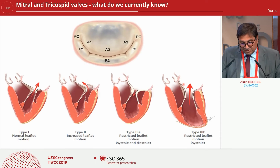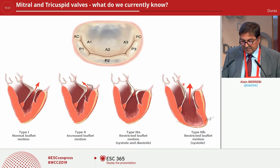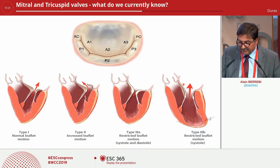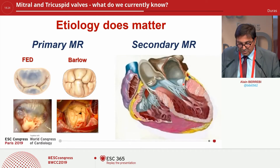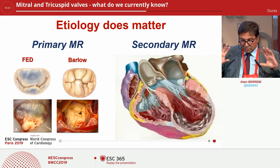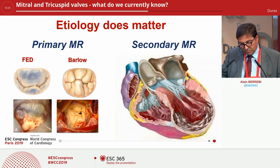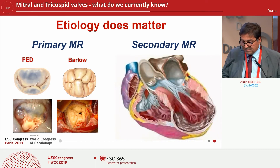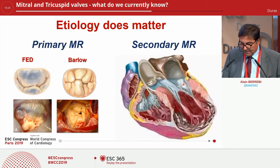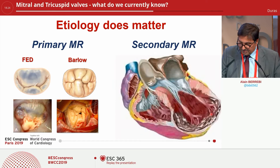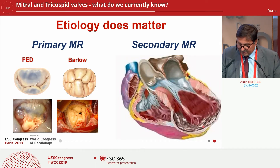What about the dysfunction? Segmental analysis and type of dysfunction — classification based on leaflet motion: type 1, type 2, type 3A, type 3B — is still valid to communicate in a common language with your interventionalist. As Dr. Maitra points out, it's very important to clearly separate primary MR and secondary MR. In primary MR, we have degenerative valve like fibroelastic deficiency in older people and Barlow in young adults, in comparison with secondary MR where the mechanism is more a ventricular issue with dilation and deformation.